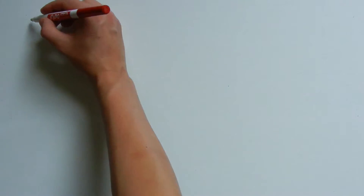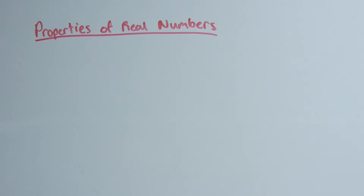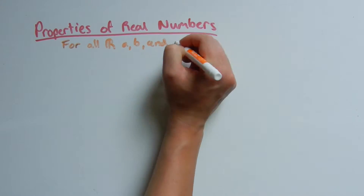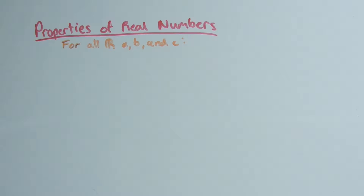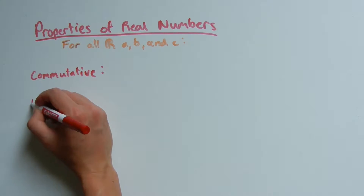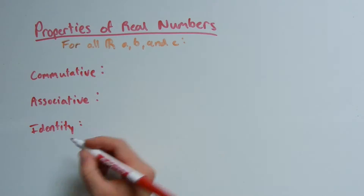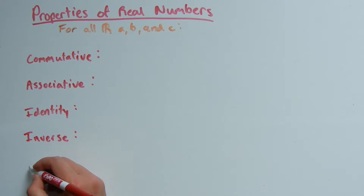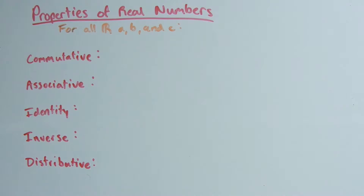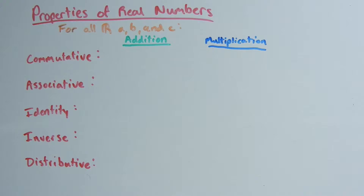The following properties are for all real numbers a, b, and c. We'll start with the commutative property, then go over the associative, the identity, the inverse, and then the distributive. These properties apply to both addition and multiplication.